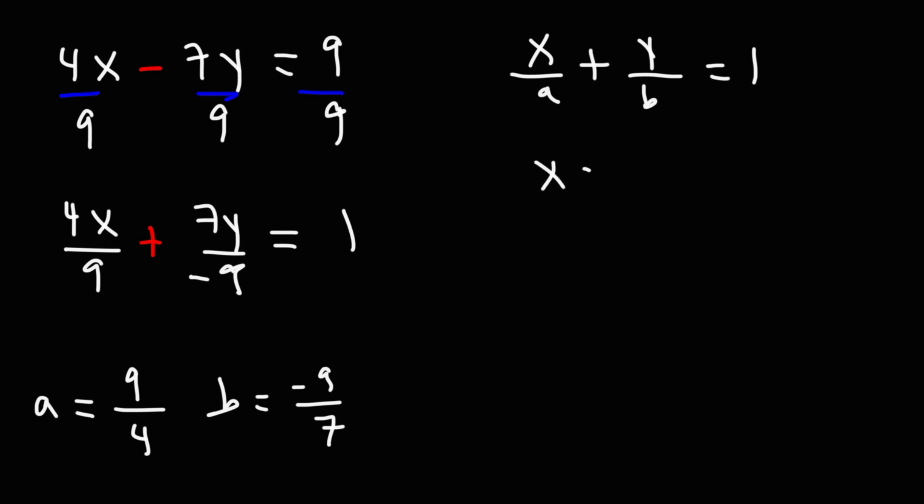So our x-intercept is 9 over 4, or as an ordered pair, that's going to be 9 over 4, 0. And the y-intercept is negative 9 over 7, or as an ordered pair, 0, negative 9 over 7.